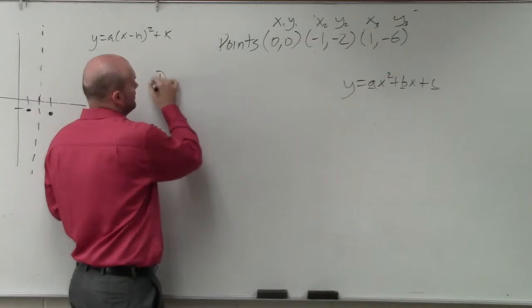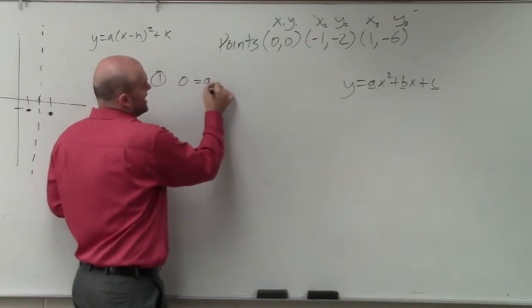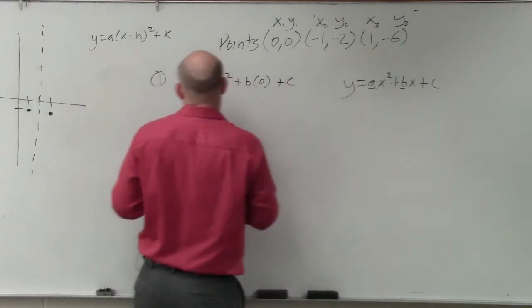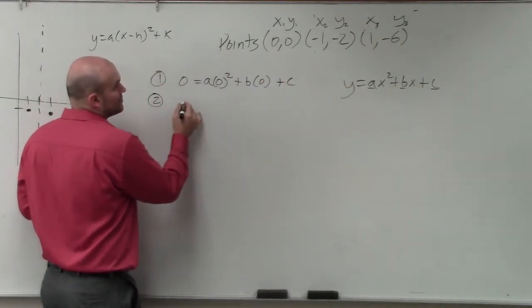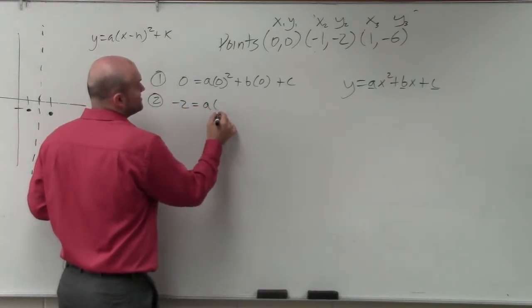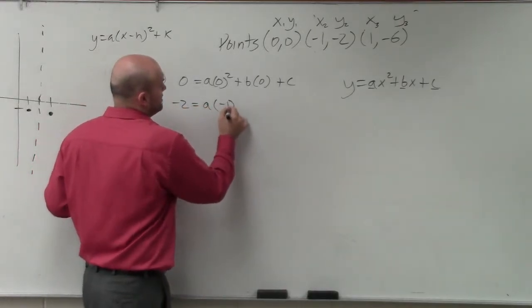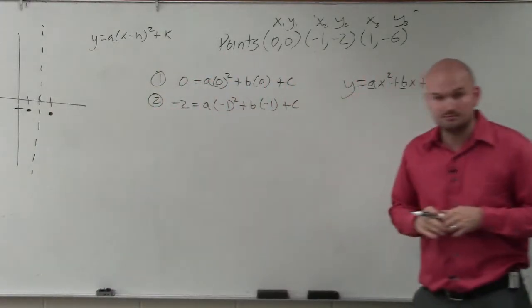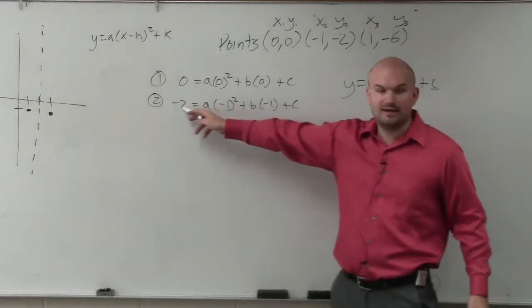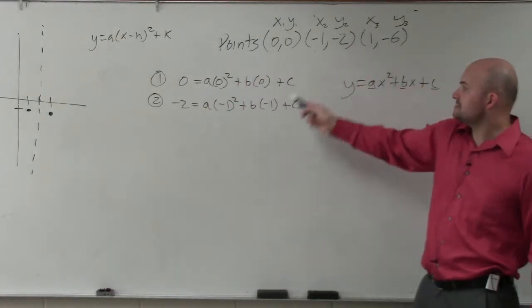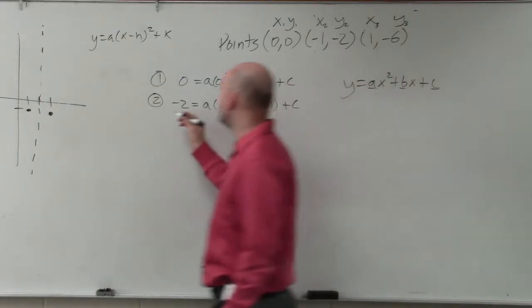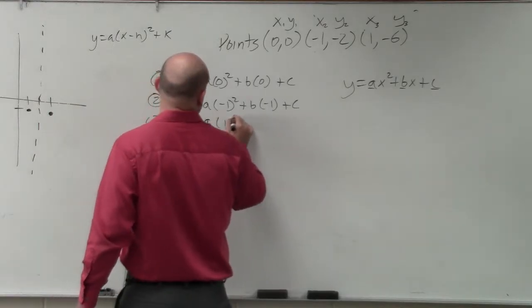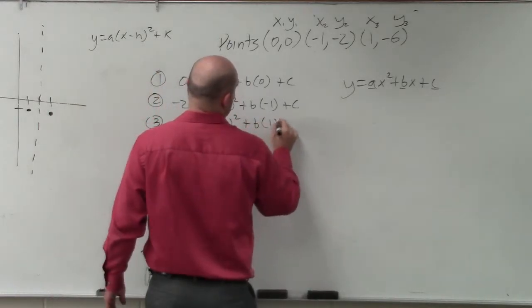So we have first equation would be 0 equals a times 0 squared plus b times 0 plus c. Equation two is going to be negative 2 equals a times negative 1 squared plus b times negative 1 plus c. All I'm doing is I'm plugging in x and y, x and the y.